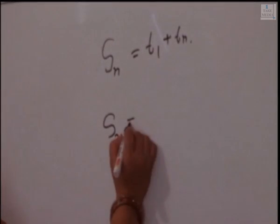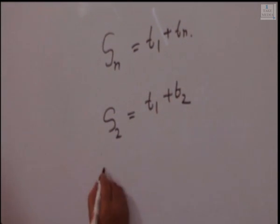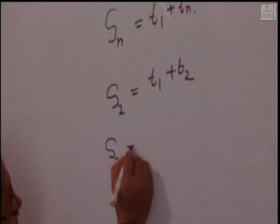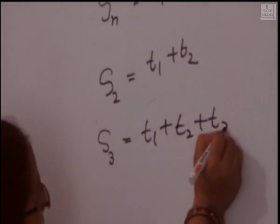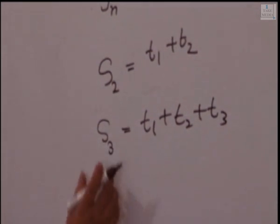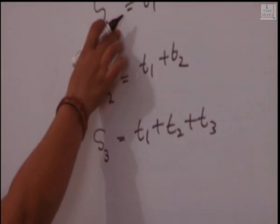Exercise 1.1, sub-question 3. Find the first 3 terms of the sequence for which Sₙ is given below. The first question is: what is the meaning of Sₙ? Sₙ means sum of the terms. S2 means T1 plus T2. If you have to calculate S3, it means T1 plus T2 plus T3. This is the sum of the numbers.